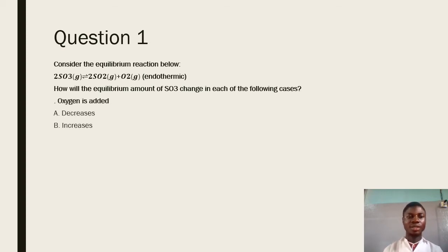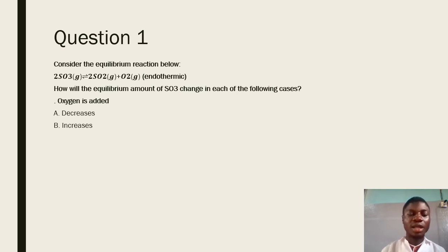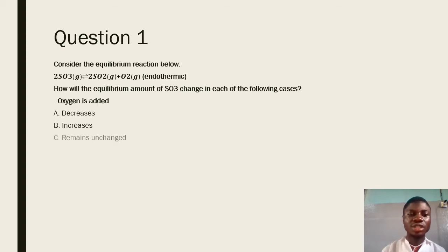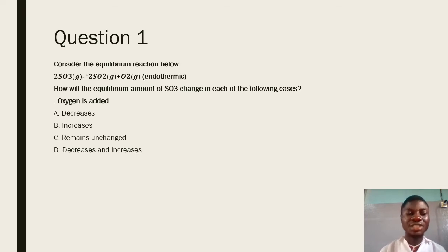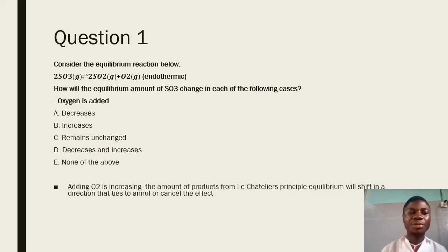The first case: oxygen is added. If oxygen is added to this equilibrium system, we want to know how the amount of sulfur trioxide is going to change. To detect this change, we must state Le Chatelier's Principle correctly. Le Chatelier's Principle states that when an external stress is applied on a reversible reaction at equilibrium, the equilibrium position is going to shift in a direction that tries to annul or cancel the effect. In the reverse reaction, oxygen is a product, so there is an increase in the amount of oxygen. Therefore, from Le Chatelier's Principle, the equilibrium position should shift in a direction that tries to decrease the equilibrium amount of oxygen.